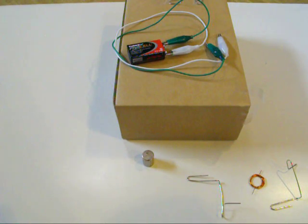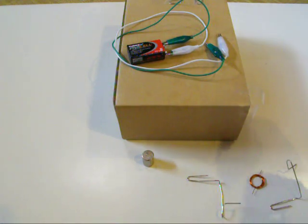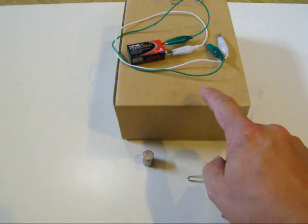So here we are at part two of making the homemade motor. To speed things up a little bit, I took out a couple pieces of scotch tape and put them over here on the side of this box that we're going to use to mount the motor on.